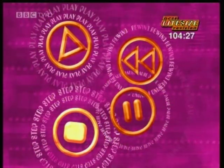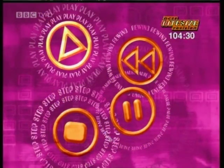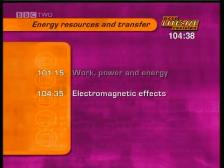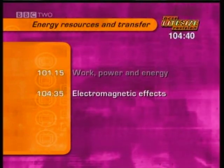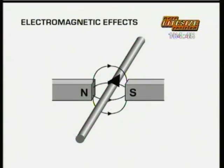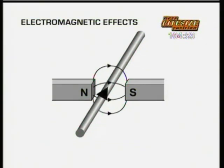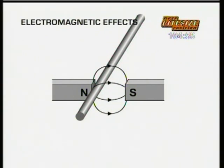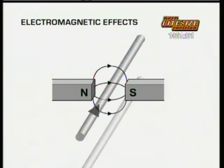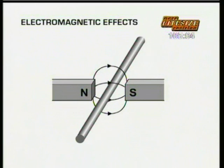That's the end of the higher tier section on work, power and energy. This higher tier section is about electromagnetic effects. An electric current flowing in a wire produces a magnetic field around it. If that wire passes through another magnetic field, it causes the wire to move sideways. When the current flows, the wire moves one way, and if the current is reversed, the wire moves the other way. The interplay of these forces is the basis of the electric motor.